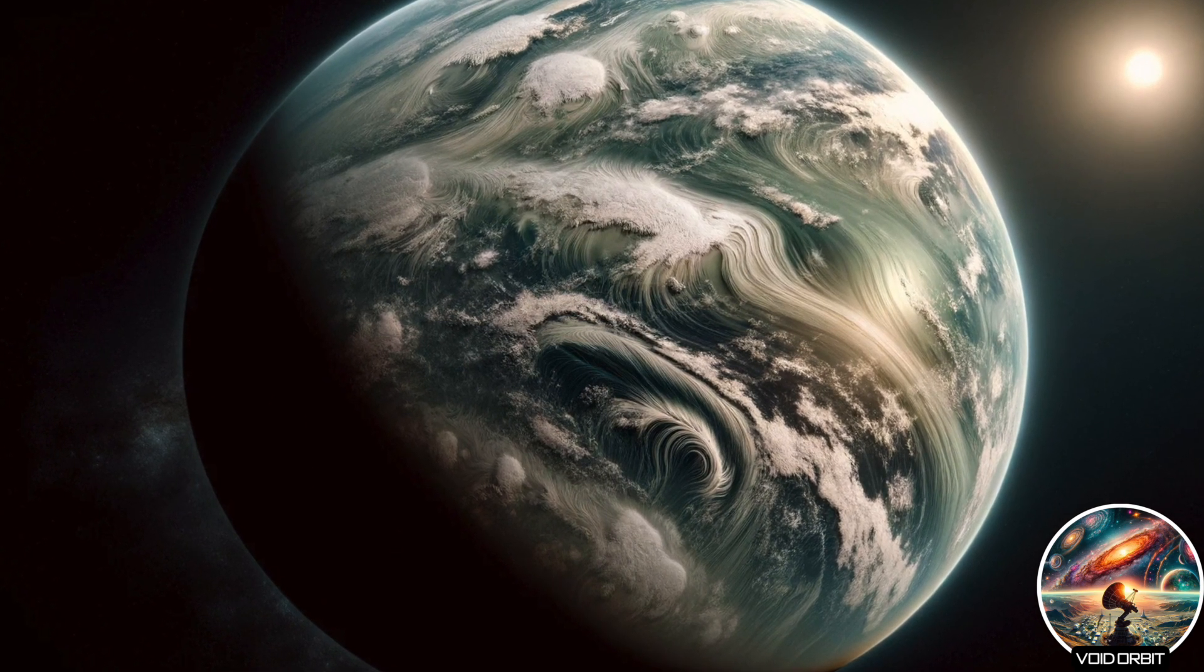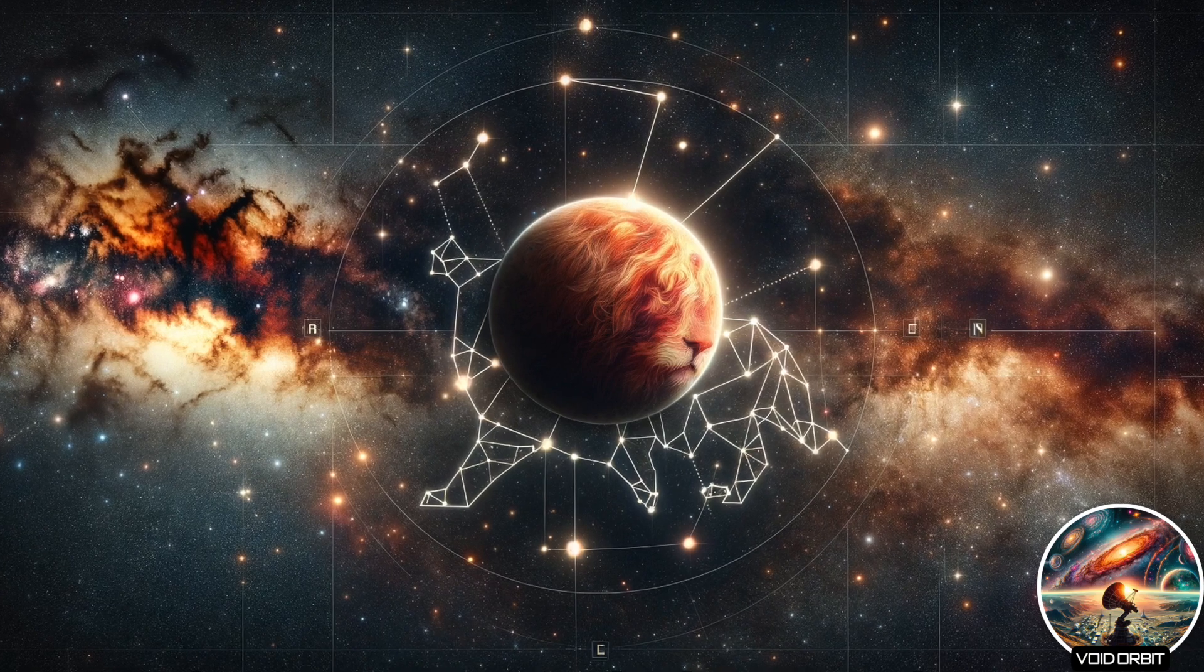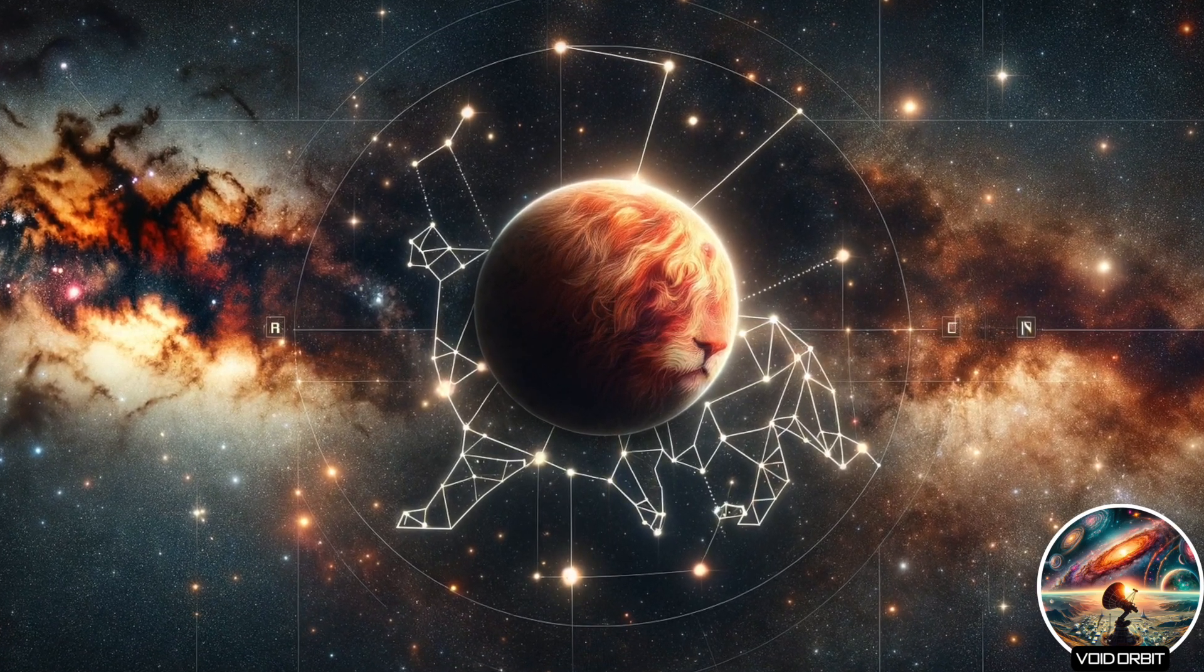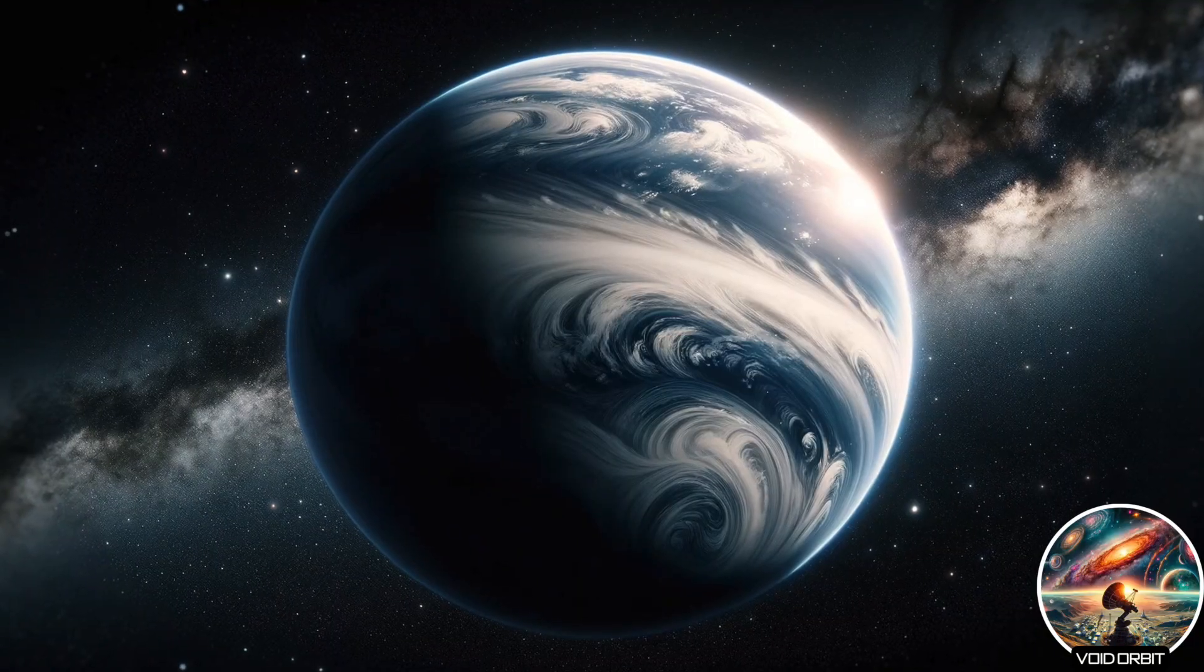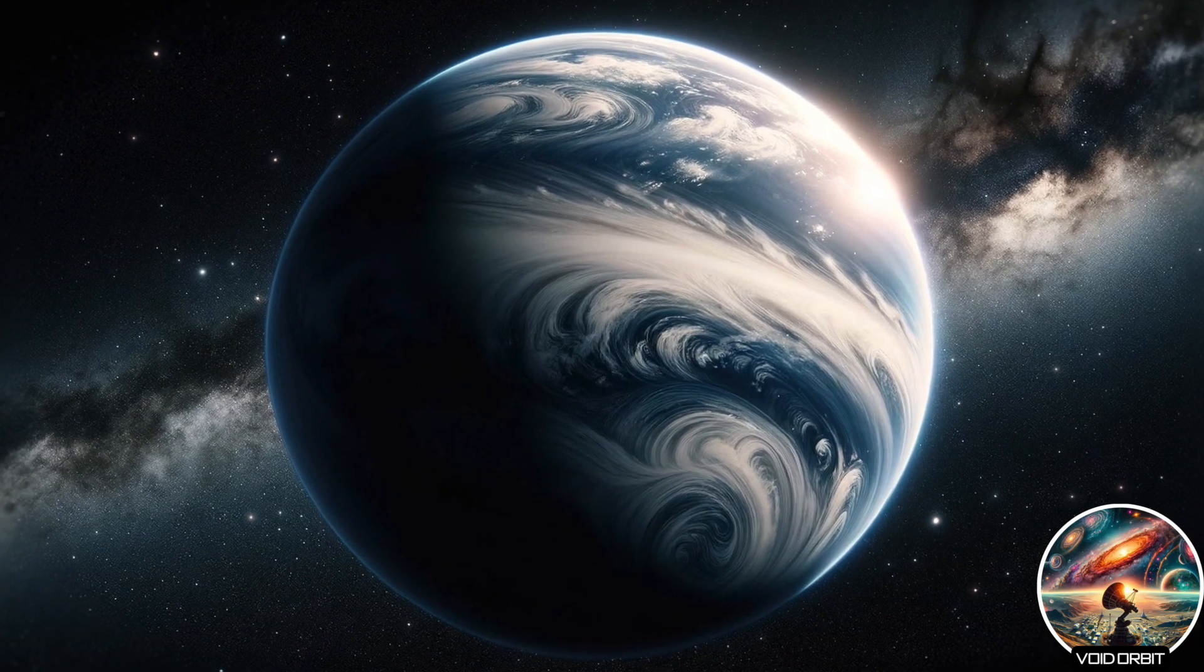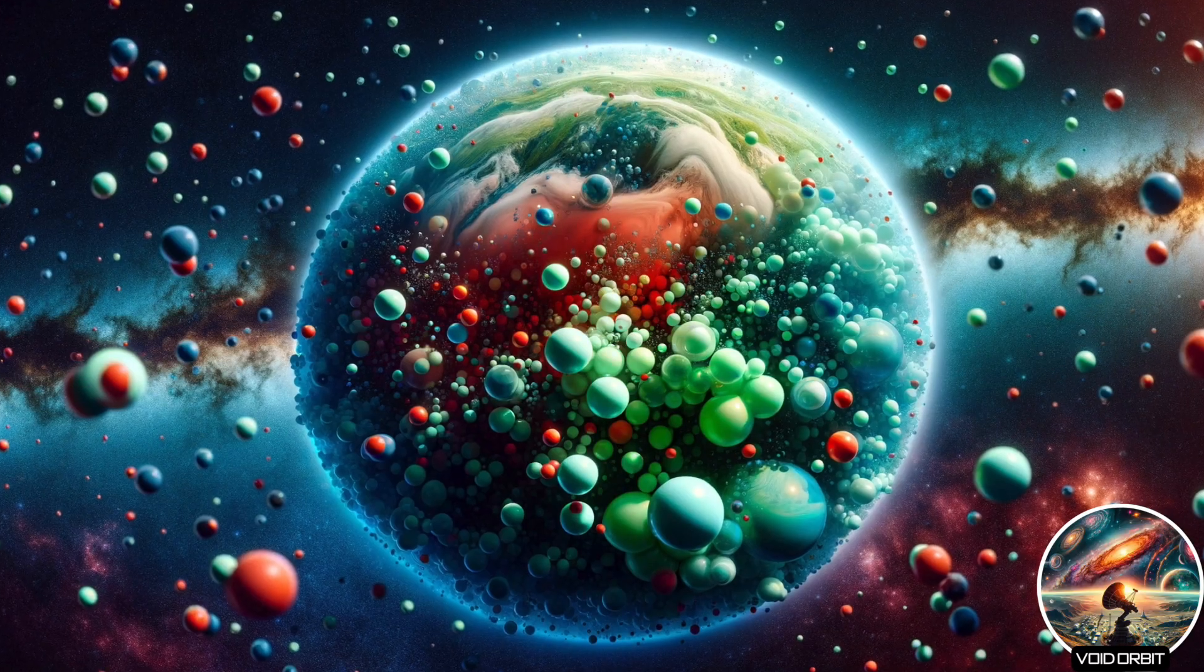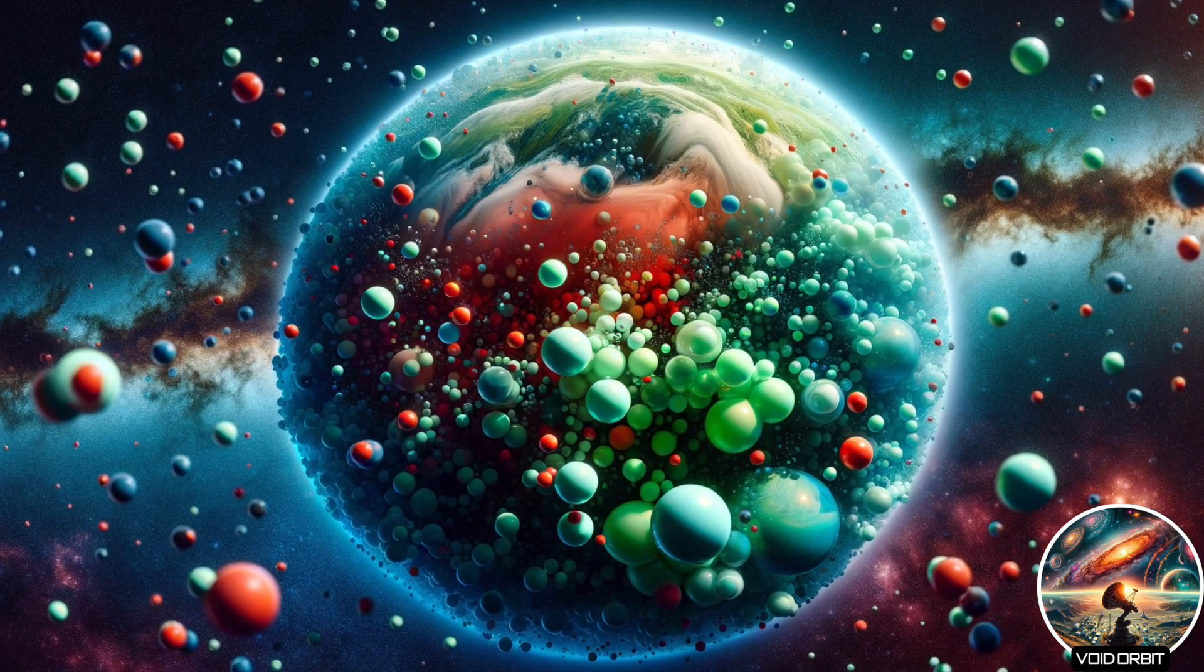This distant world, nestled in the constellation of Leo, is unlike any other. It's a colossal planet with a mass 8.6 times that of Earth. But the real intrigue lies in its atmosphere, a rich blend of carbon-based molecules, methane, carbon dioxide, and potentially the elusive signatures of life itself.